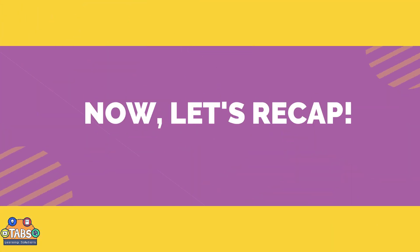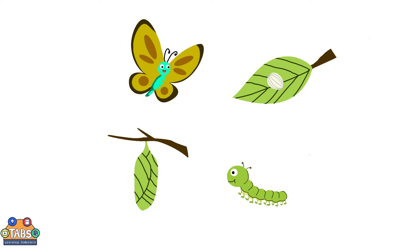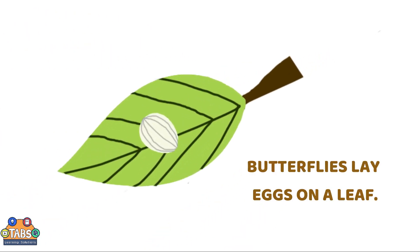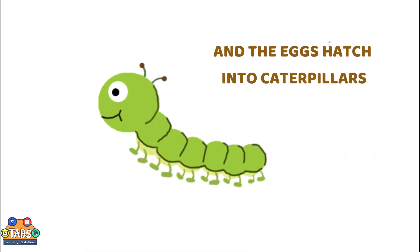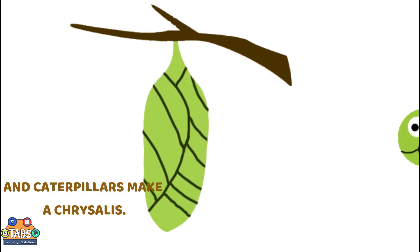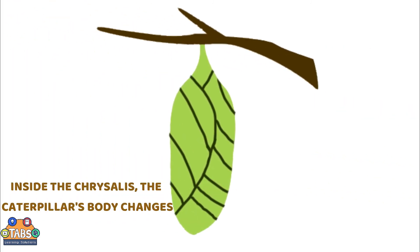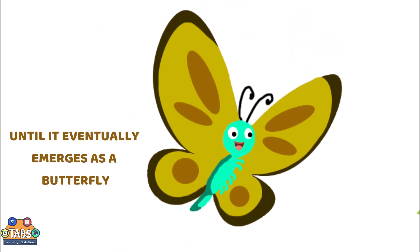Now let's recap. Butterflies lay eggs on a leaf, and the eggs hatch into caterpillars, and caterpillars make a chrysalis. Inside the chrysalis, the caterpillar's body changes until it eventually emerges as a butterfly.